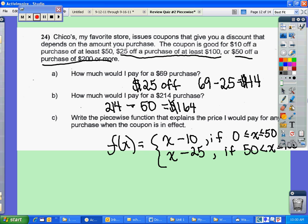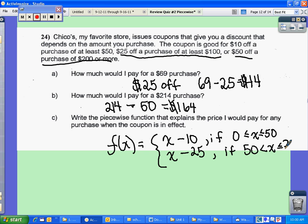I'm not $100, excuse me, $200. So my next interval goes up to $200. Then I'm going to get $25 off. My last, I'm going to get $50 off if I spend over $200. So x is greater than $200.